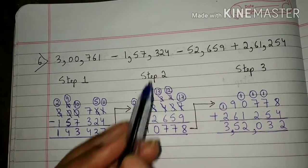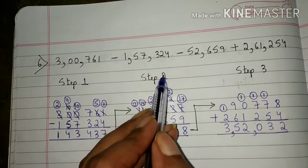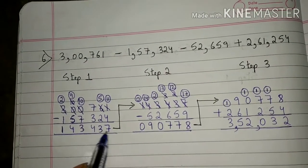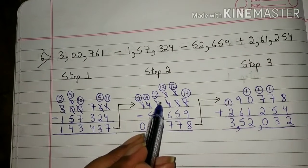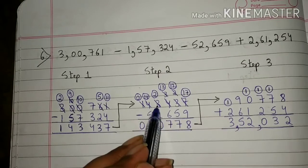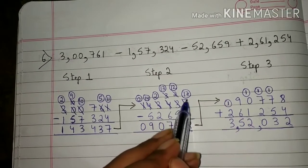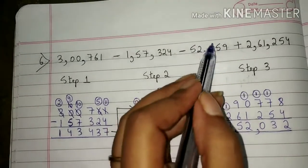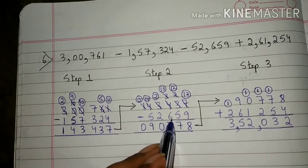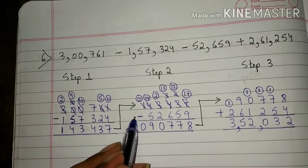In step 2, we will do subtraction. We will write 10,43,437 here, and after that we will write the third number, that is 52,659, here. Now we will subtract the numbers.